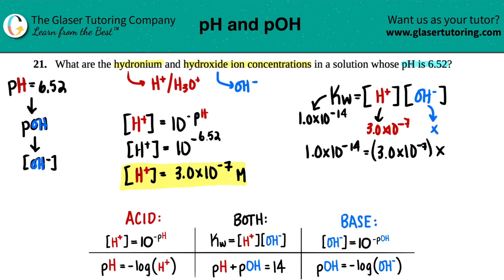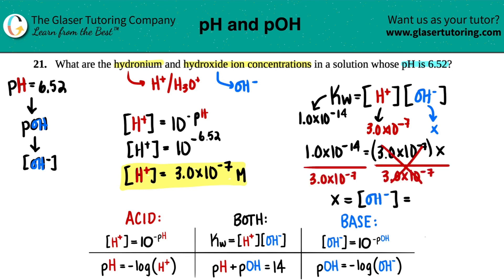So 1.0×10⁻¹⁴ divided by 3.0×10⁻⁷. With two sig figs, we get 3.3 times 10 to the negative 8th — also in molarity. And there we go: these are your two answers. We found the hydronium concentration of 3.0×10⁻⁷ M and the hydroxide concentration of 3.3×10⁻⁸ M.